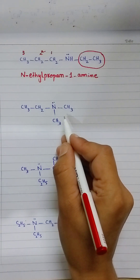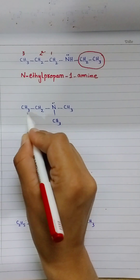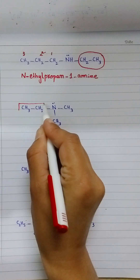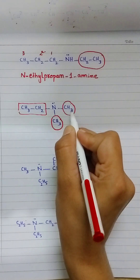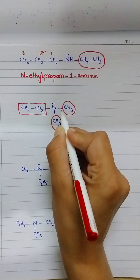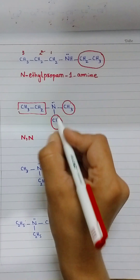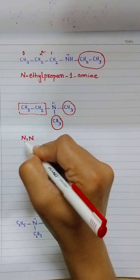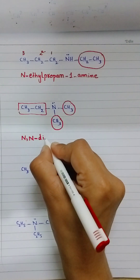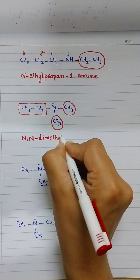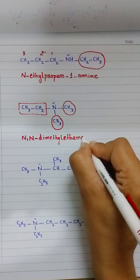Next example is tertiary amines because there are three alkyl groups: the first alkyl group is one-carbon methyl, the second is one-carbon methyl, and the third is two-carbon ethyl. Since ethyl is the bigger group, it is selected for the end name. The two remaining methyl groups are both attached to nitrogen, so nitrogen is written twice as 'N,N'. Two similar one-carbon alkyl groups use the prefix 'di', giving dimethyl. The two-carbon chain is ethane. End name: amine — N,N-dimethylethanamine.